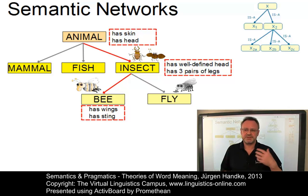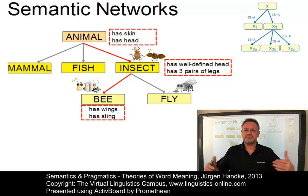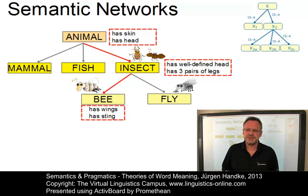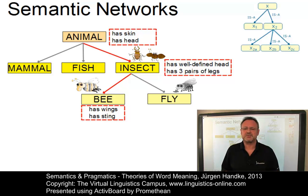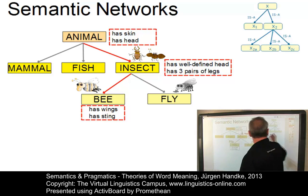Despite their elegance, semantic networks are problematic in many ways. The main problem concerns their size: even if just a fraction of the set of human concepts is represented, a gigantic database will be the result. A more economic way of organizing human concepts uses frames.